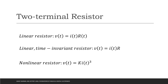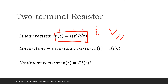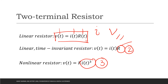Resistors need not be linear — they can be non-linear. Resistors have an algebraic relation between their instantaneous terminal current and instantaneous terminal voltage. For a linear resistor, voltage is equal to I times R, where all factors have a dependence on time. For a linear time-invariant resistor, R does not have any relationship with time. For a non-linear resistor, as shown here, the current has an exponent of 3.